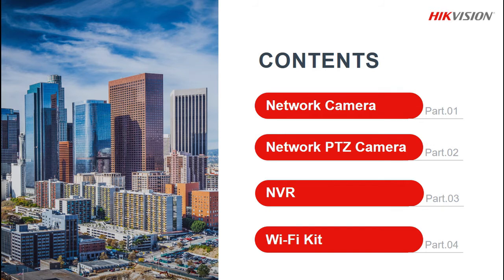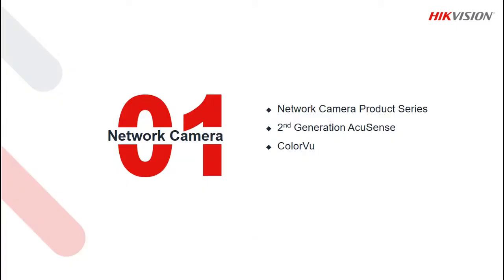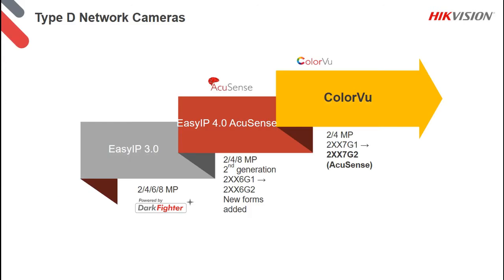We're going to start off with network cameras — that's part one. Network PTZ is part two, and NVR is part three. We will not cover the Wi-Fi section, part four. Starting off with part one, we'll look at the network camera product series, secondly the second generation AccuSense, and thirdly the ColorView range of cameras.